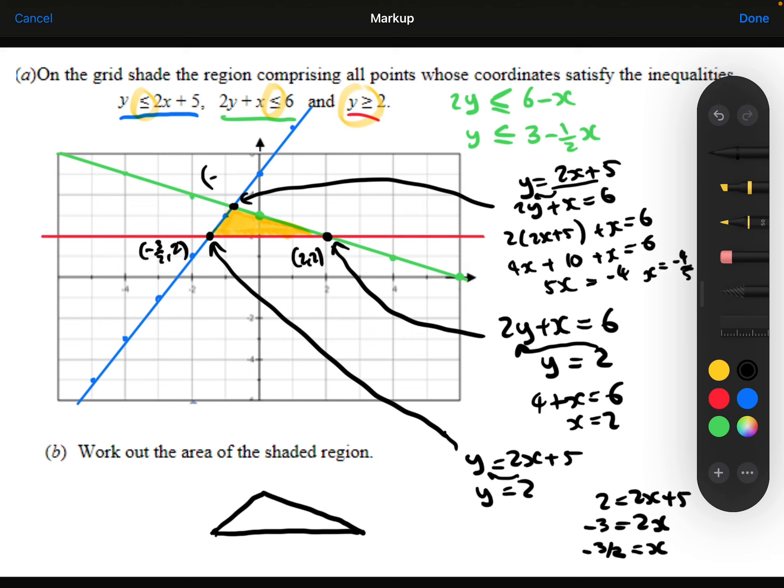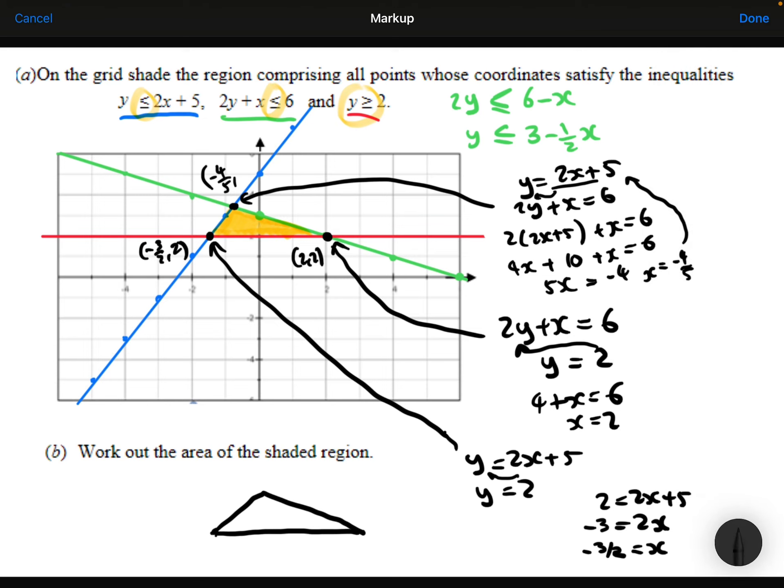x is minus 4.5. Substitute that back into either of those equations. I'm going to put it in the first one to get the y coordinate. So 2 lots of the minus 4.5 plus the 5, which is minus 9 plus 5, which is -4.